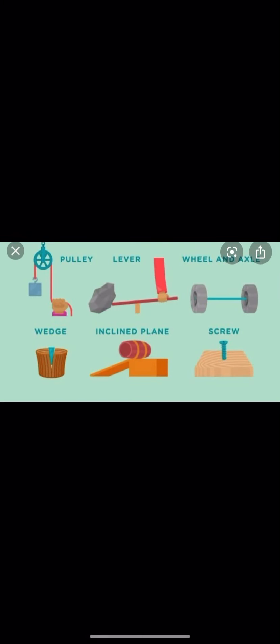Good morning girls! Today I want to talk about the kinds of simple machines. We know that there are six simple machines — we took them before. They are pulley, lever, wheel and axle, wedge, inclined plane, and screw.